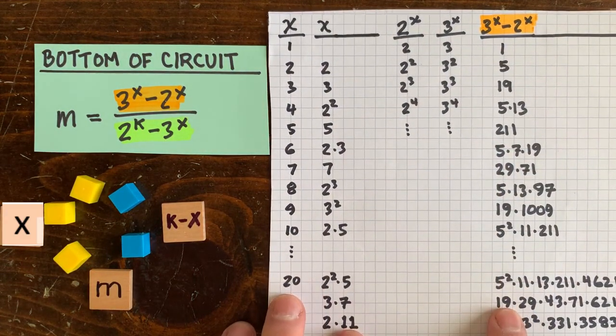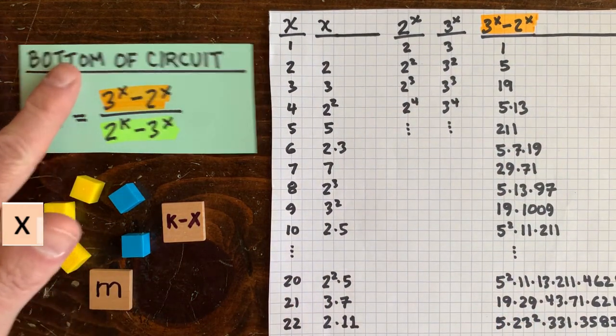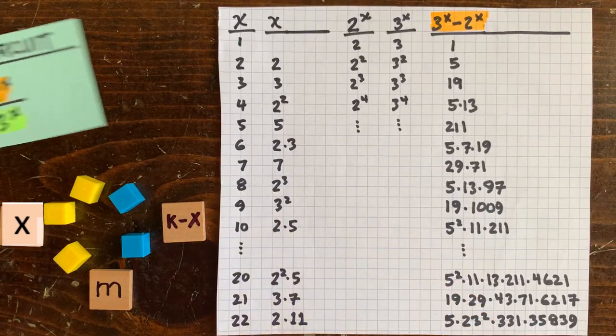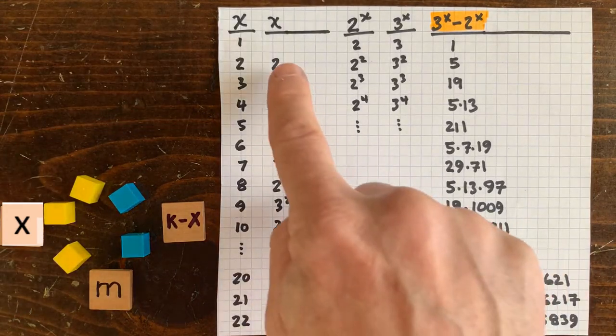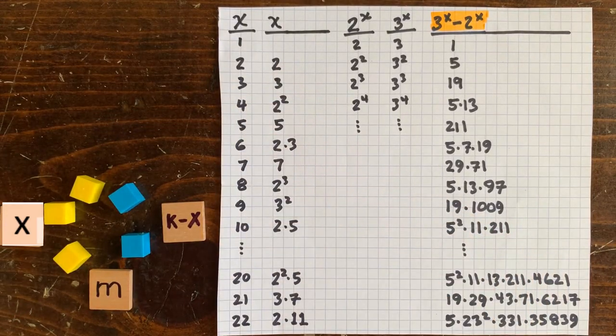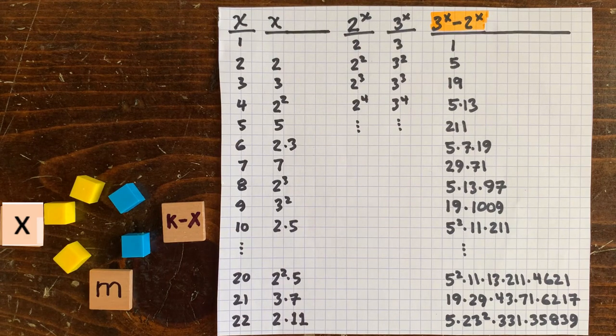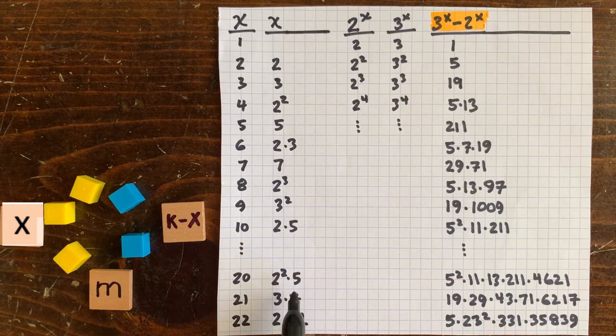Before we look at how 3 to the x minus 2 to the x factorizes, let's look at how plain old x factorizes. Here are the prime factorizations of x. They look pretty random.